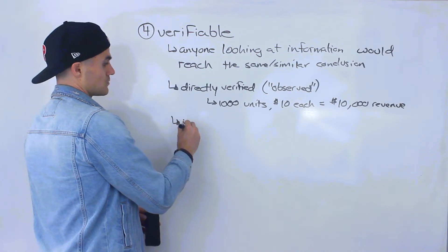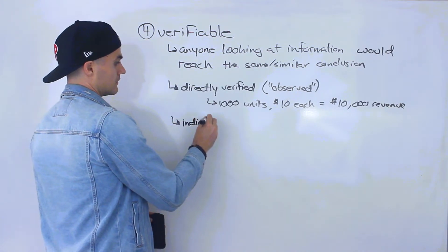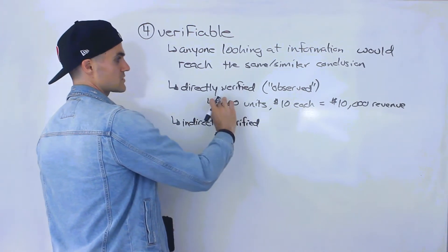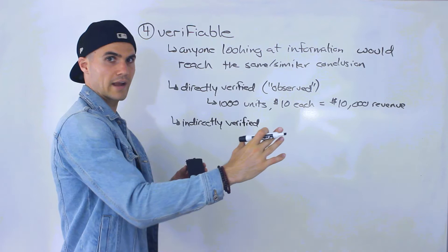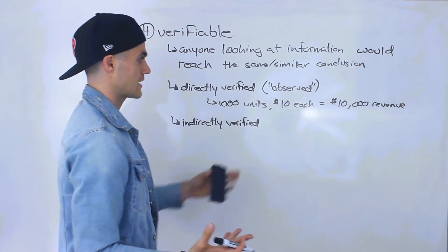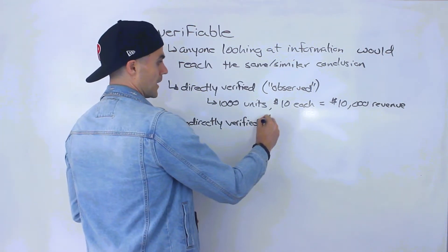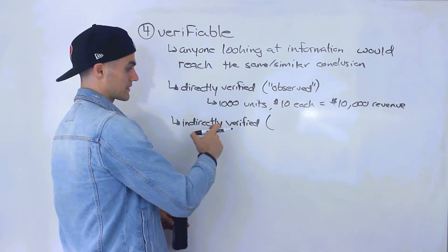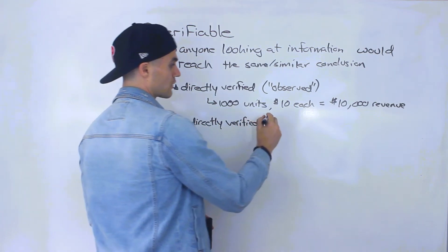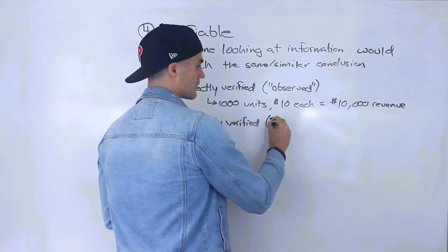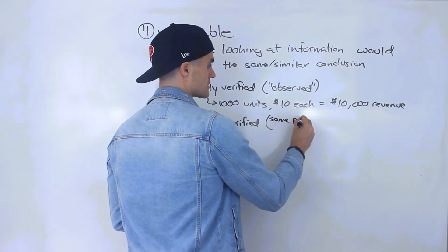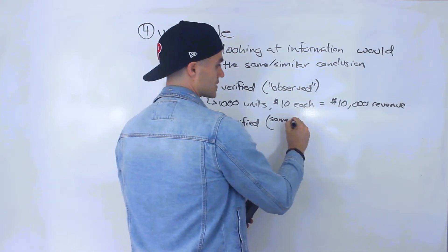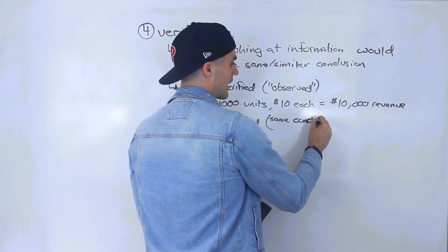Information can also be indirectly verified. That was a more simple calculation — 1,000 times 10 gave us $10,000. But sometimes certain calculations may be a little bit more complex, and so the same process or same conclusion or same value should be reached.